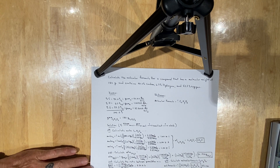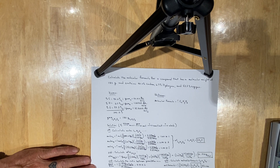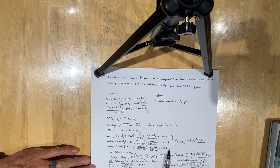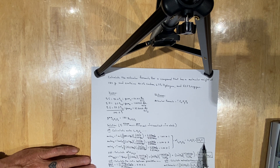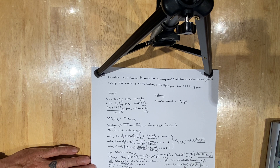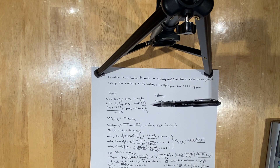In closing, molecular formula problems can be a little bit longer, but they're not all that difficult. When you recognize that percent composition data is converted to mass, mass to moles, you divide by the smallest number of moles to find a simple whole number ratio. Once you have that, you write the empirical formula, calculate the empirical formula mass, compare it to the gram molecular mass to get a whole number multiplier, and multiply your empirical formula to find your molecular formula — which in this case is glucose.